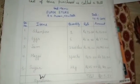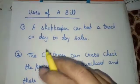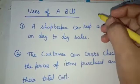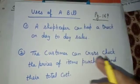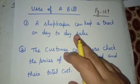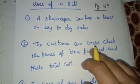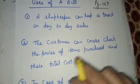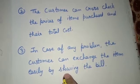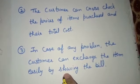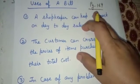After this, we have some uses of a bill, which are given at page number 169 of our book. There are three uses of the bill. First, a shopkeeper can keep a track on day-to-day sales. Second, the customer can cross-check the prices of items purchased and their total cost. Third, in case of any problem, the customer can exchange the item easily by showing the bill.